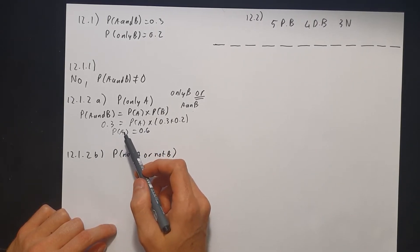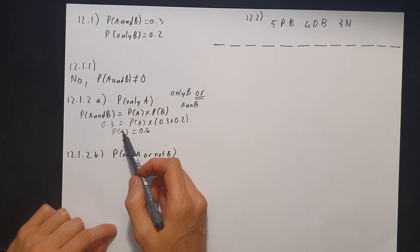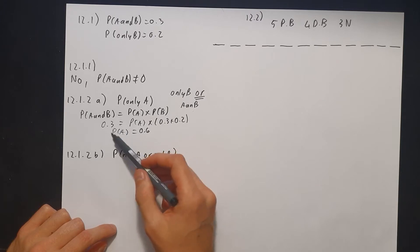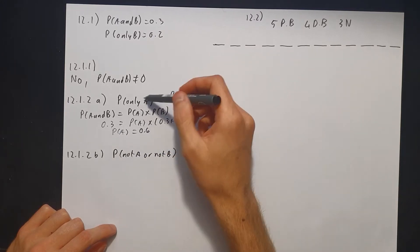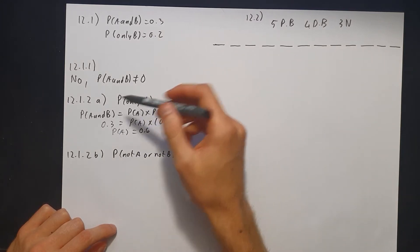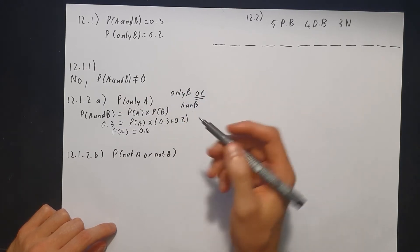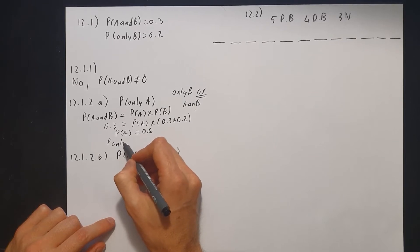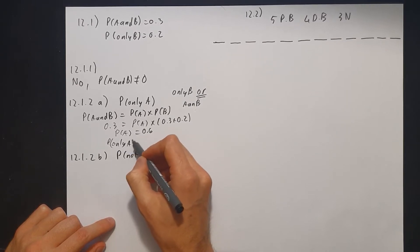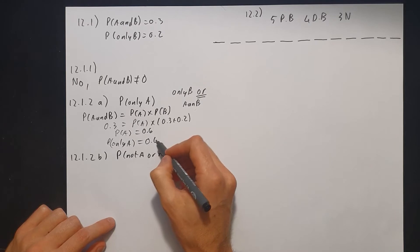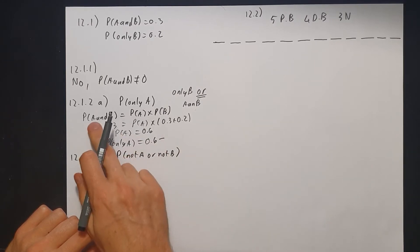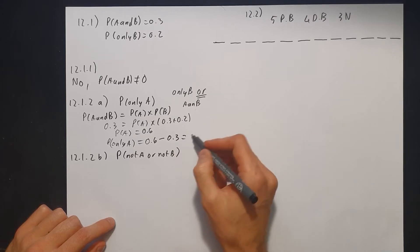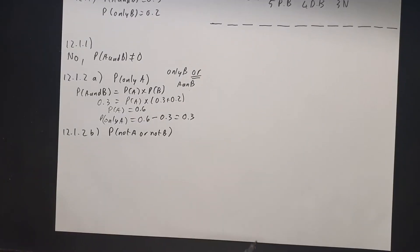Now remember, the probability of only A is what we're looking for. A can happen from only A, or from A and B — or means plus. So if we want P(only A), we take the probability of A happening, which is 0.6, and subtract the probability of A and B happening, which is 0.3. That gives us P(only A) equals 0.3.